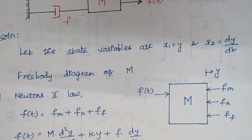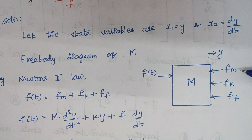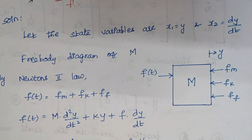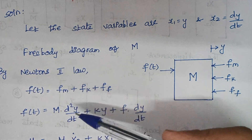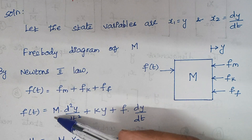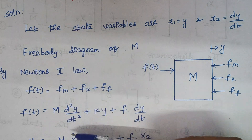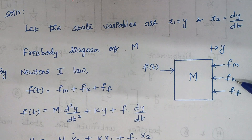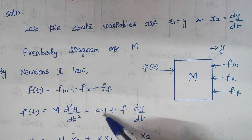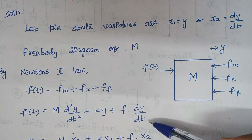By Newton's second law, applied force is equal to opposing force. The applied force is f(t) and the opposing forces are fm, fk, and ff. We have to substitute the respective values for the forces. The opposing force produced by the mass m is given by m·(d²y/dt²), because the respective displacement is y. The opposing force produced by the spring is k·y, and the opposing force produced by the dashpot f is f·(dy/dt).